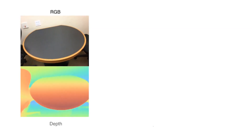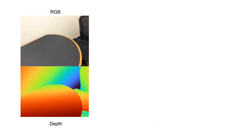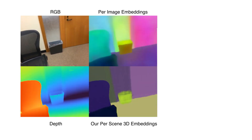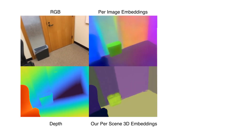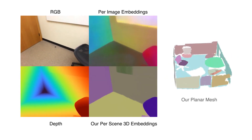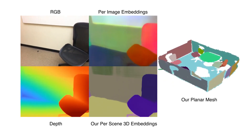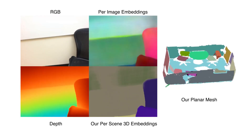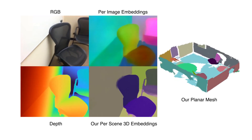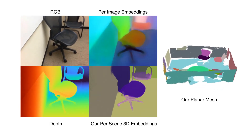For a given ScanNet test sequence, here we show the RGB input, the predicted depth maps, predicted per-image embeddings, our per-scene 3D embeddings reprojected to 2D, and our final planar mesh representation of the scene. Our per-scene embeddings are consistent across frames, in contrast to the per-image embeddings.